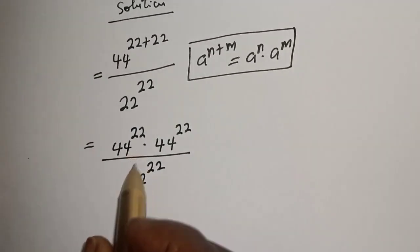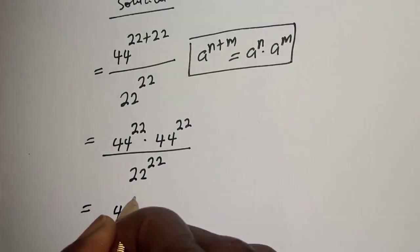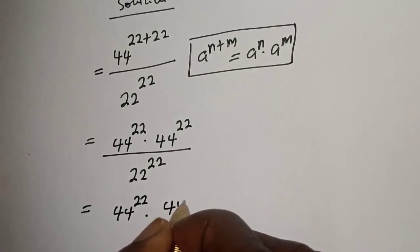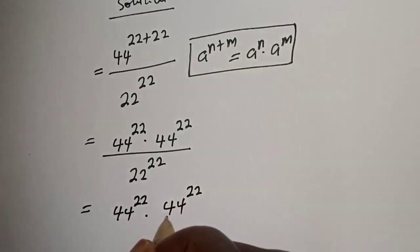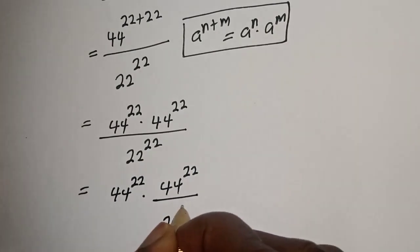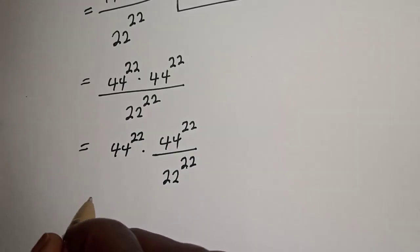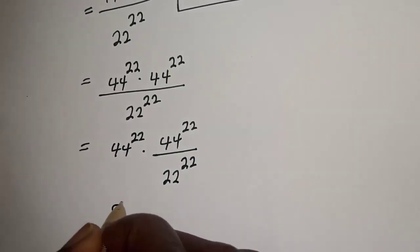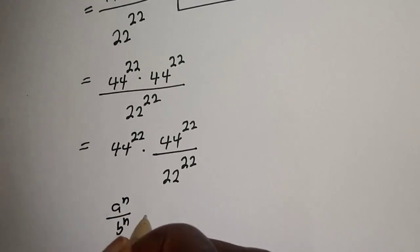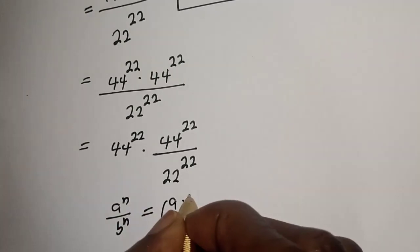We can split this as 44 raised to power 22 multiplied by 44 raised to power 22 divided by 22 raised to power 22. Also take note of this rule: a raised to power n over b raised to power n is equal to a over b raised to power n.